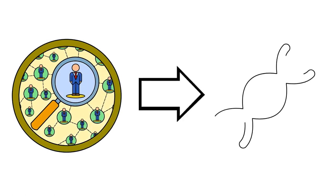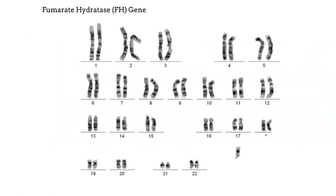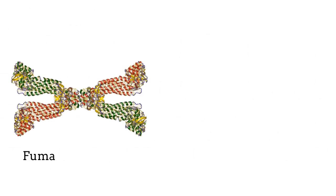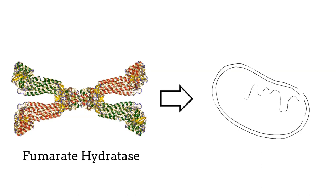Those affected with HLRCC have inherited a faulty copy of the fumarate hydratase gene along with a normal copy of the fumarate hydratase gene from their parents. Due to this faulty gene, there are lower levels of normal fumarate hydratase within the mitochondria of cells.